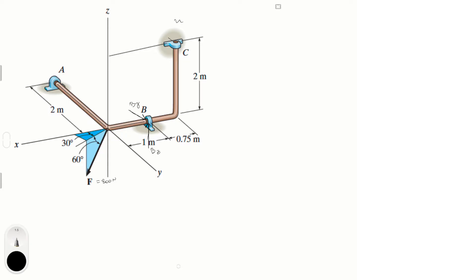Same idea with C — we have CY and CX reactions. At A, we have AZ and AX. The first step is to write the sum of forces along all axes. To do that, we need all forces in Cartesian vector form, and F is not yet in Cartesian vector form, but that's easy to find.